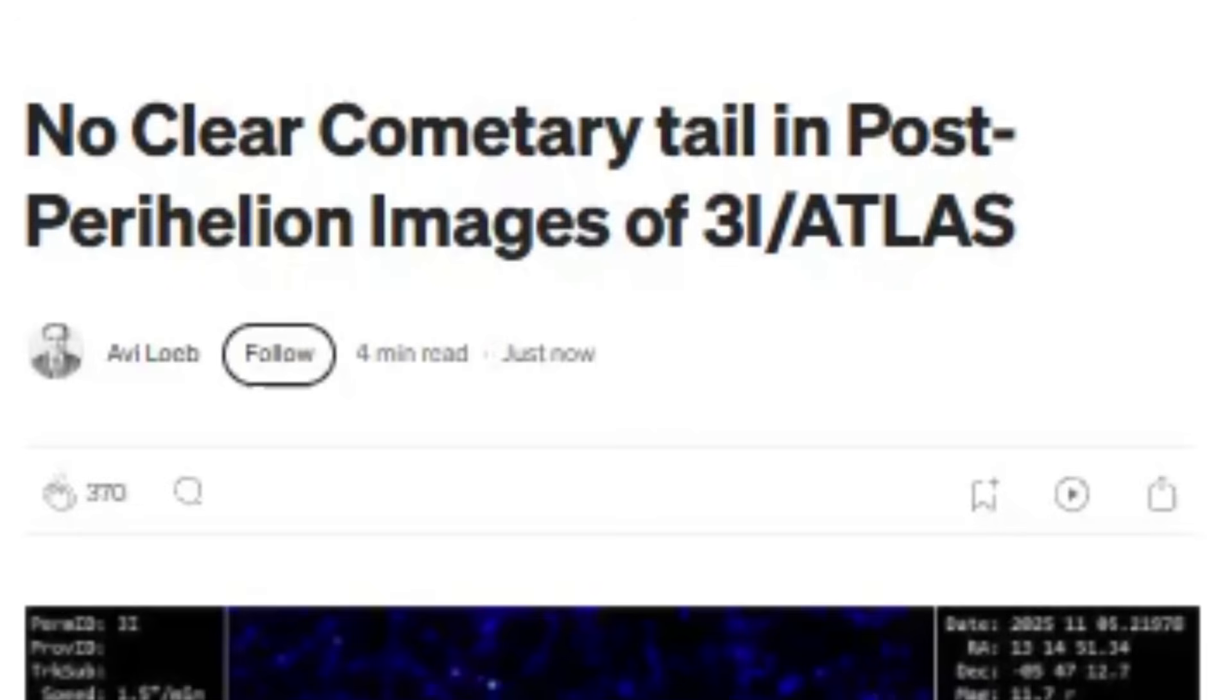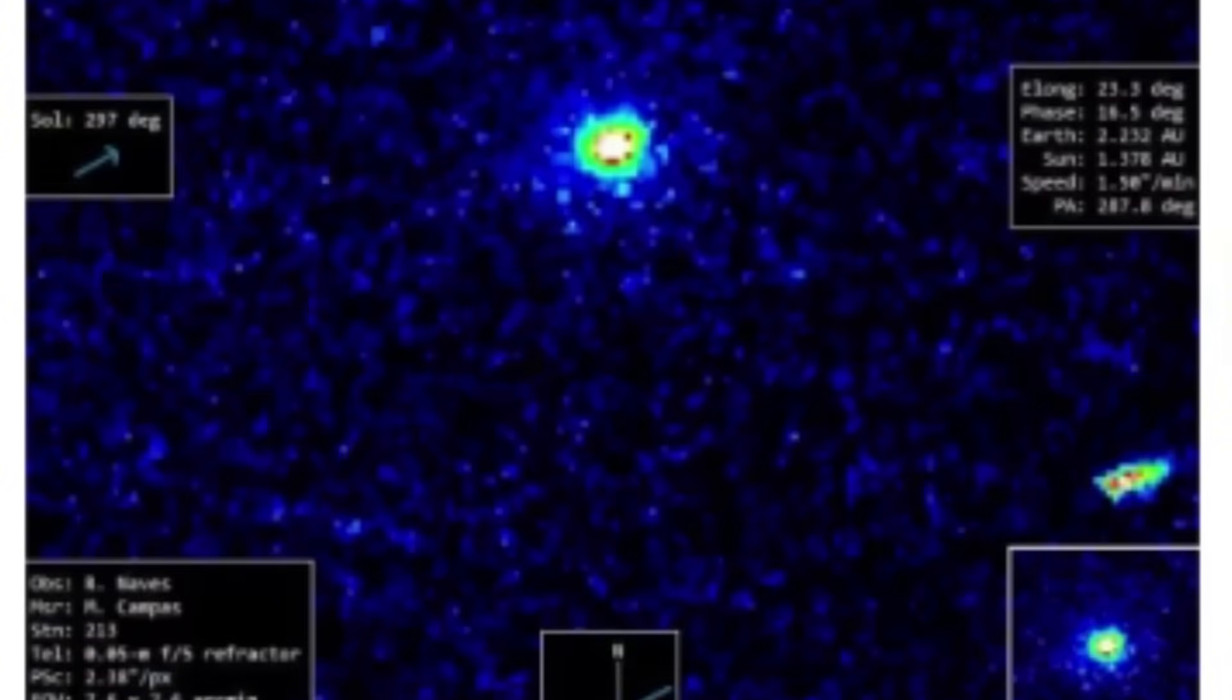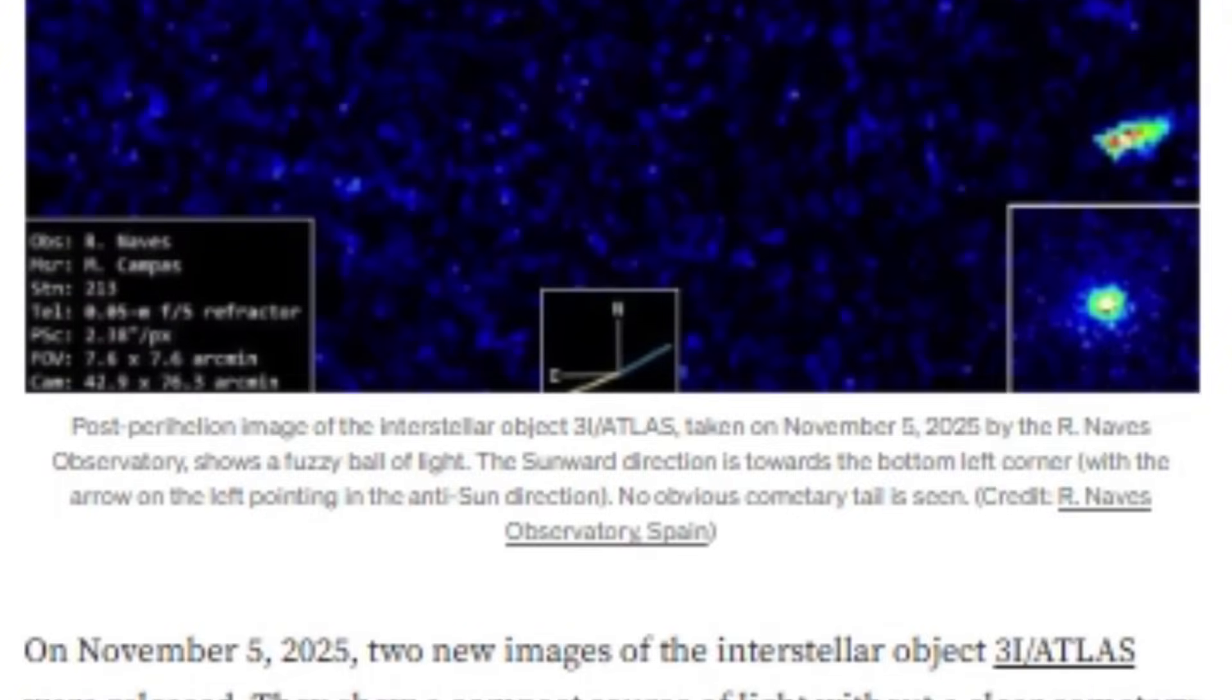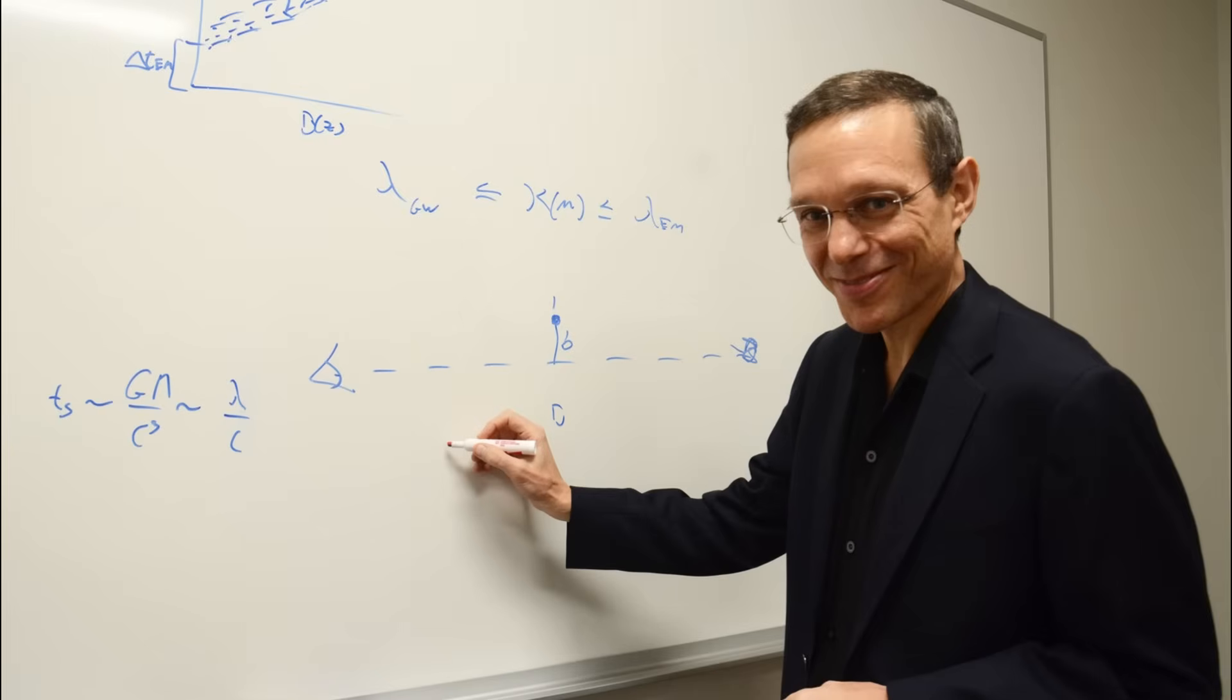The photographs show Atlas as a compact source of light without any sign of a visible cometary tail. Even more surprising, the object's appearance remains virtually unchanged since the Hubble Space Telescope observations in July 2025. As Harvard astrophysicist Avi Loeb calculated, for an object that should have lost at least 13% of its total mass, more than 5.5 billion tons of material, this absence of a massive and bright coma is simply inexplicable.